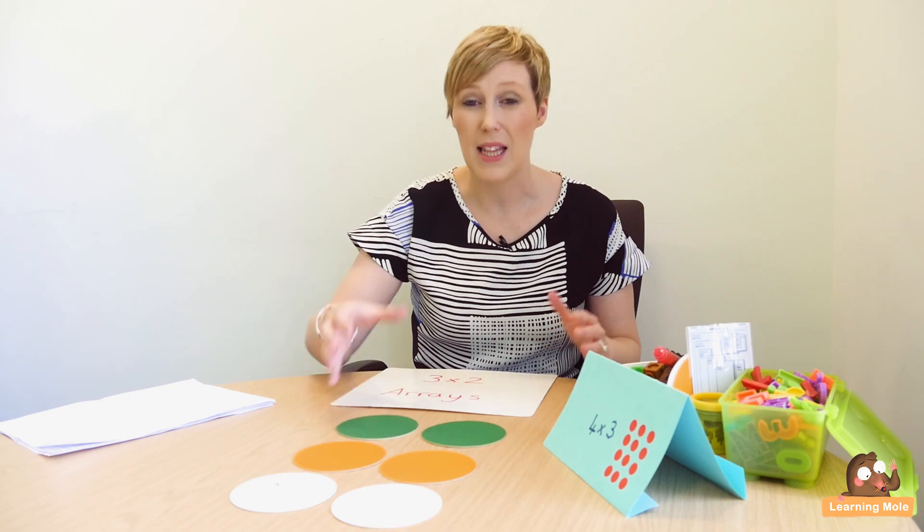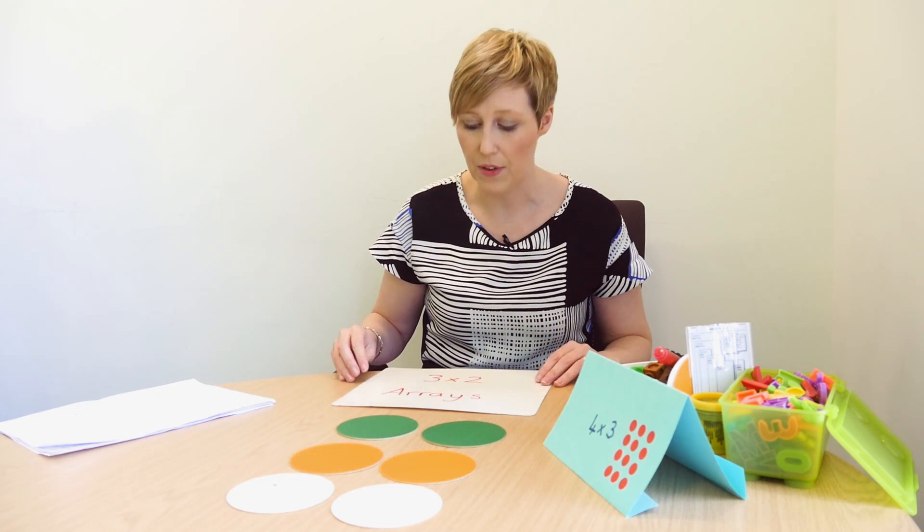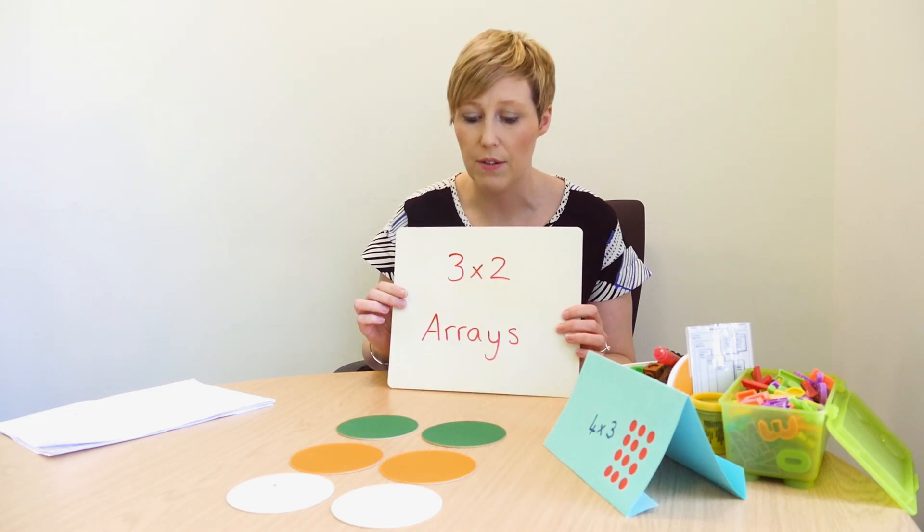I have laid out for you nice big circles — these are actually coasters from Ikea. I'm talking about things lying around the house, things that can be found quite easily or cheaply. I'm not about spending fortunes on resources; it's about using stuff that you've got at home. This is basically a little array — a visual representation of the calculation three times two. I've got three lots of two.